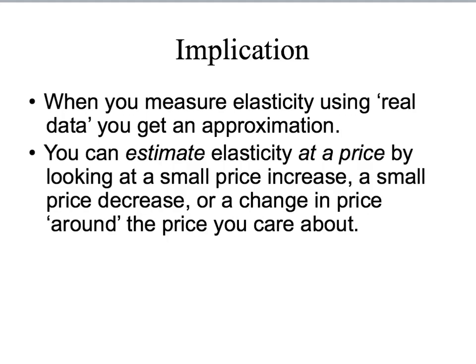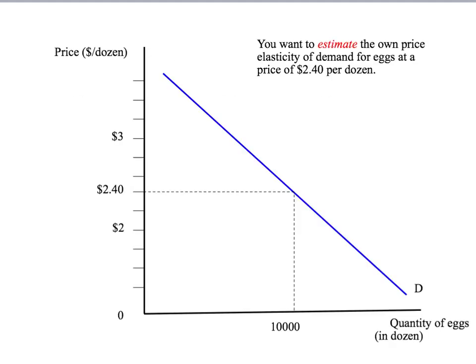Once you realise that what we're doing is trying to get an approximation of the own price elasticity at a point on the demand curve, you can recognise that we can get that estimate in a number of ways: we can look at a small price increase, a small price decrease, or a change in price around the particular point that we care about. From my perspective, I don't mind which of these approaches you use — however, if your lecturer tells you to use a particular one, please do so. Let's see how we'd run through each of these methods to estimate the own price elasticity for eggs at a price of $2.40 per dozen when 10,000 dozen eggs are demanded.